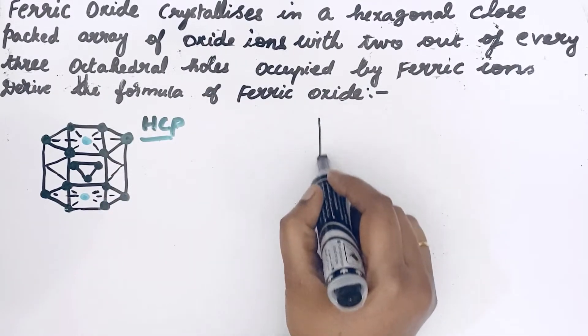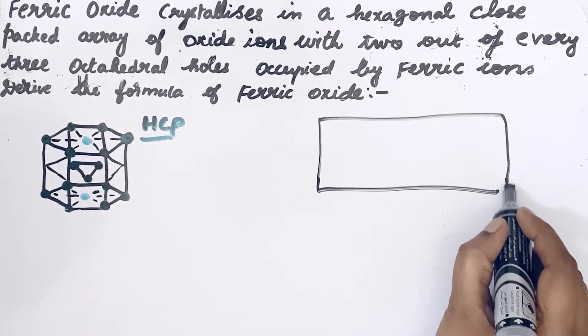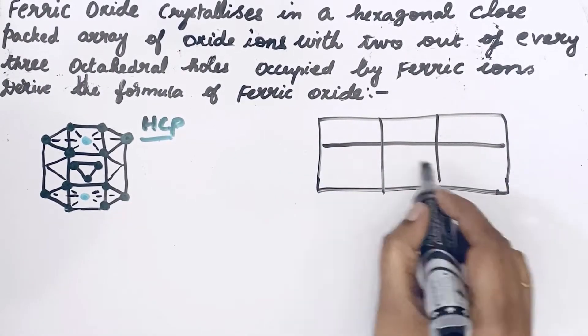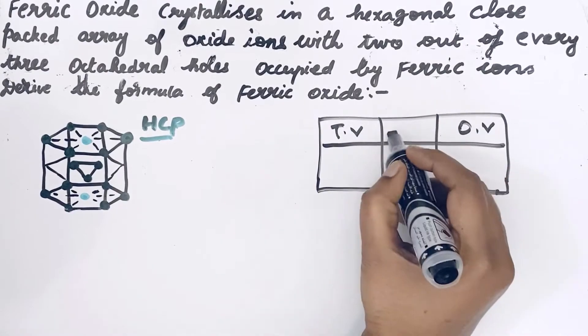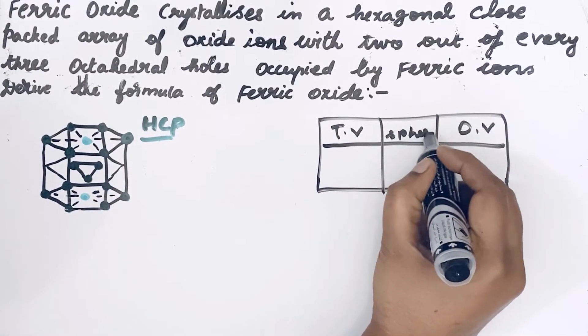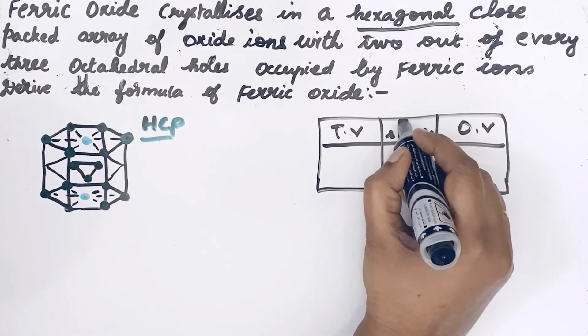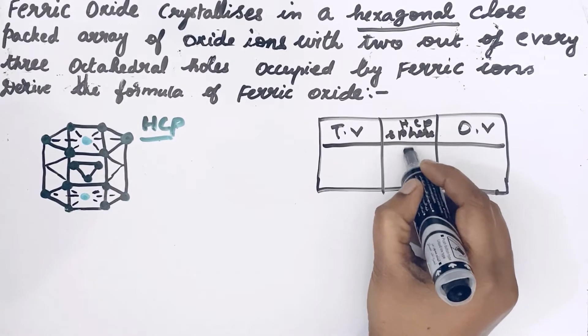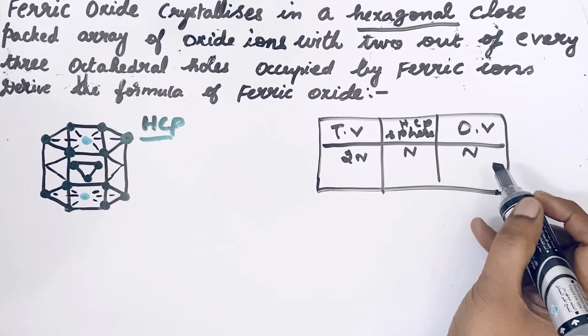First, let us draw columns to represent the relation between voids and spheres. This is tetrahedral void, octahedral void, and sphere. In the question you can see it is hexagonal close-packed, so HCP sphere. If the HCP sphere is n, then tetrahedral void is 2n and octahedral void is n.